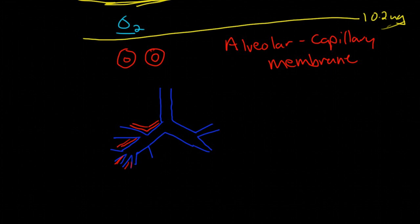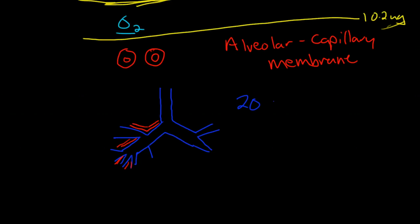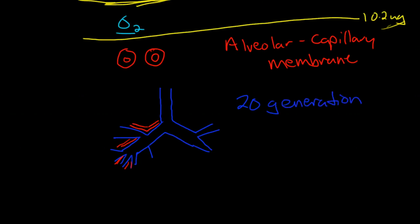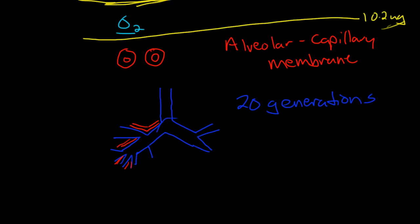We have perfect matching. There are approximately 20 generations of branches of airways. This would be the first generation, this would be the second generation, and here's a third generation. We have 20 generations, each one is going to have around three branches.